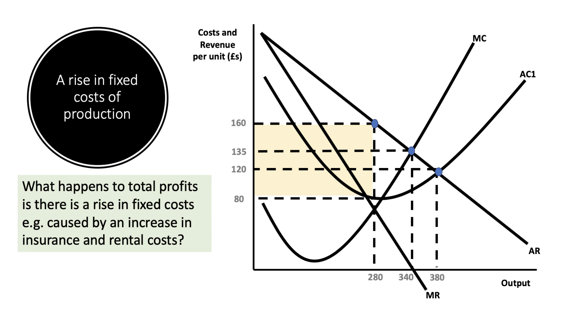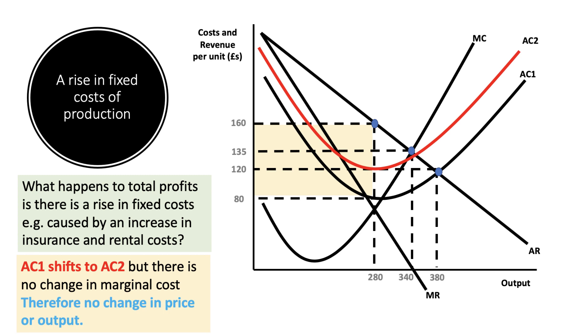Well, no change in variable costs, so no change in marginal cost. That's the secret, the key to this question. If fixed costs go up, then the average cost will increase. AC1 shifts to AC2, but there is no change in marginal cost. That stays the same. As a result, there's no change in the price or the output where a firm maximizes profits.